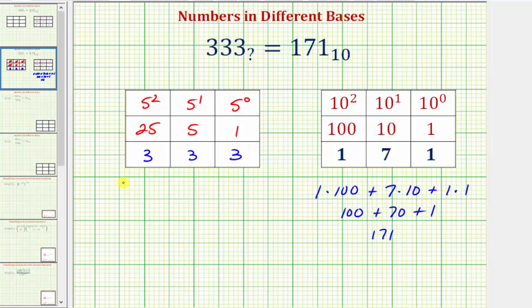So for the number 333, in base 10 this would be equal to three times 25 plus three times five plus three times one, which would be 75 plus 15 plus three, which equals 93 base 10. So now we know that 333 base five is equal to 93 base 10, but we want this to be equal to 171 base 10, not 93 base 10, which means that base is going to have to be larger than base five.